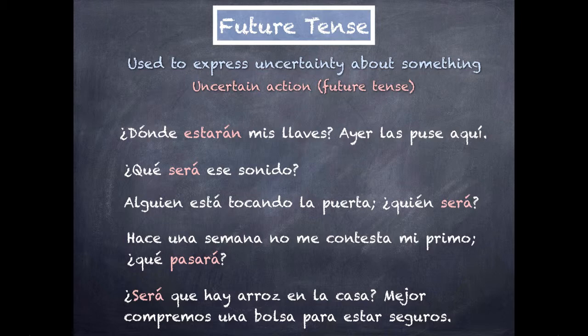Let's take a look at a few examples of expressing uncertainty. ¿Dónde estarán mis llaves? Ayer las puse aquí. Here the speaker is unsure of where his keys are — 'Where are my keys? Yesterday I put them here.' Estarán is used to express uncertainty, almost an expression of 'where on earth are my keys?'